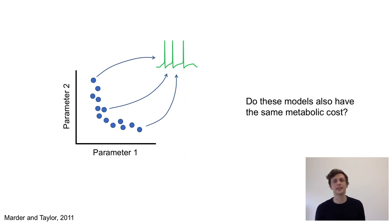In this study, we investigated the metabolic cost of parameter configurations with similar activity. Specifically, we were interested not just in single neurons, but in networks, and whether the metabolic cost can differ despite similar network activity.